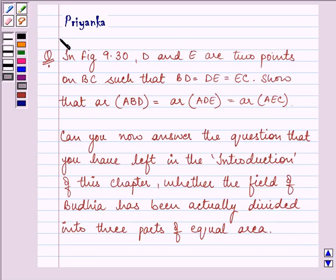Hello and how are you all? Today my name is Priyanka. The question says in figure 9.30, D and E are two points on BC such that BD is equal to DE is equal to EC.